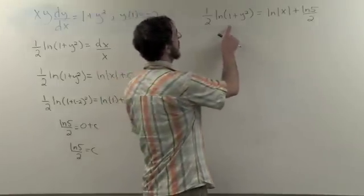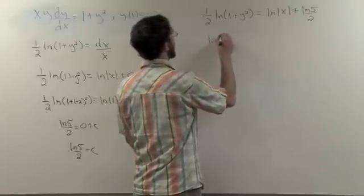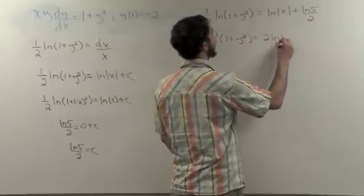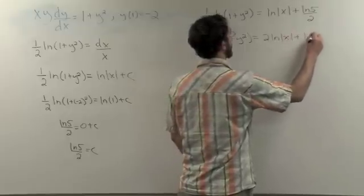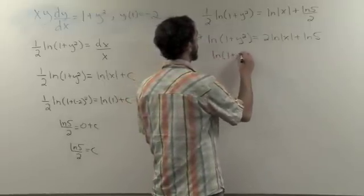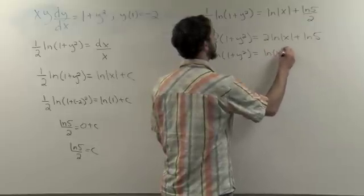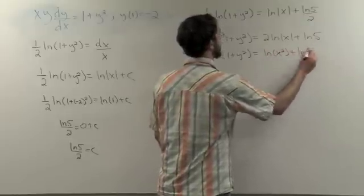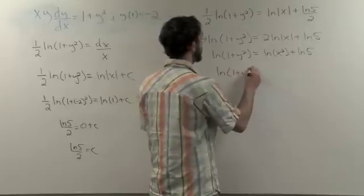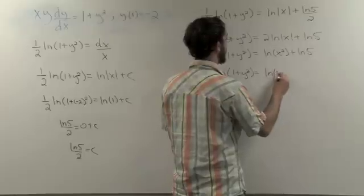To start, let's multiply each term in the solution by 2. This leaves us with ln of 1 plus y squared equal to 2 ln absolute value of x plus ln 5. Next, we can use the property of logarithms to rewrite the right side of the equation as the ln of x squared plus ln of 5. Then, again using property of logarithms, we can rewrite the right side of the equation as ln of 5 x squared.